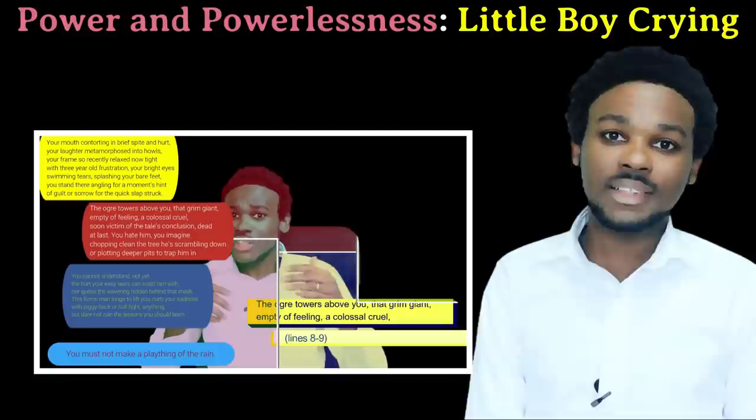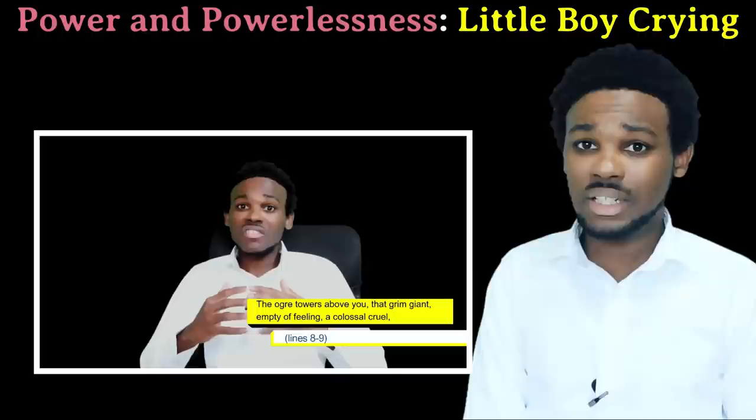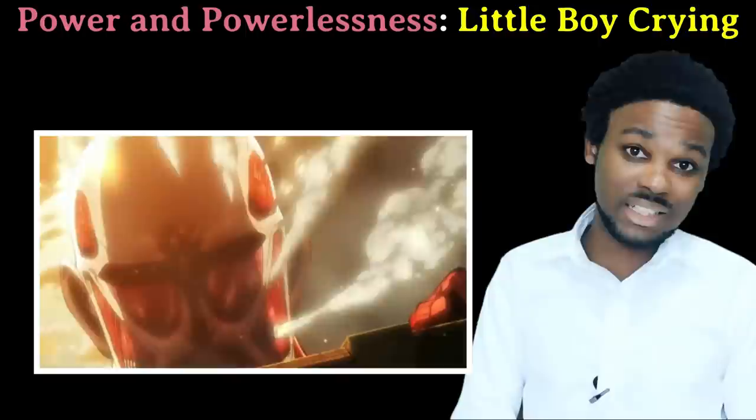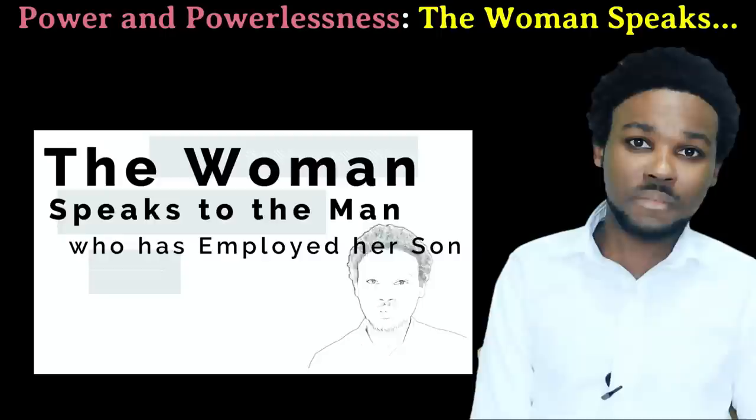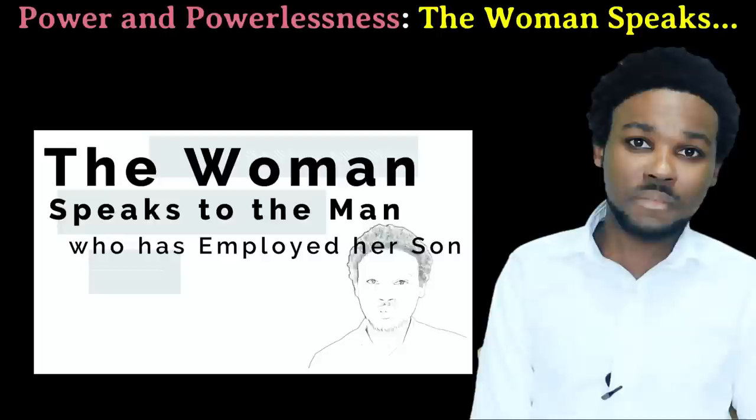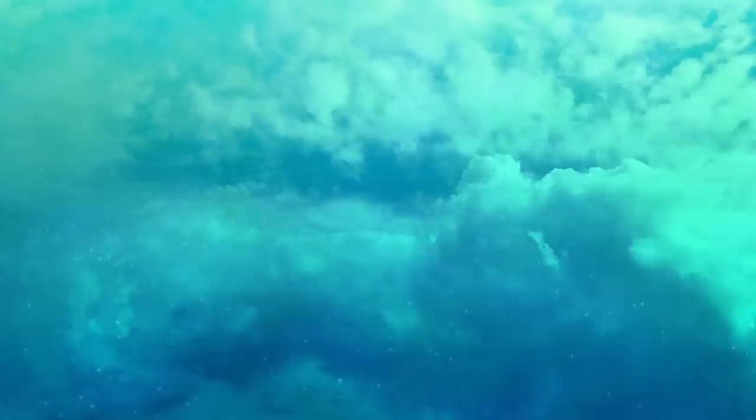In Little Boy Crying, we see the world from the perspective of a toddler. He feels powerless, as obviously he cannot overpower his father. His father shows him tough love, as lessons must be learned. The little boy sees this tough love as villainy and fantasizes about killing his father. In The Woman Speaks to the Man Who Has Employed Her Son, the woman in the poem is powerless because her son has chosen a life of crime. Her son idolizes and works for a gangster, and though she loves her son, she can't do anything about it.